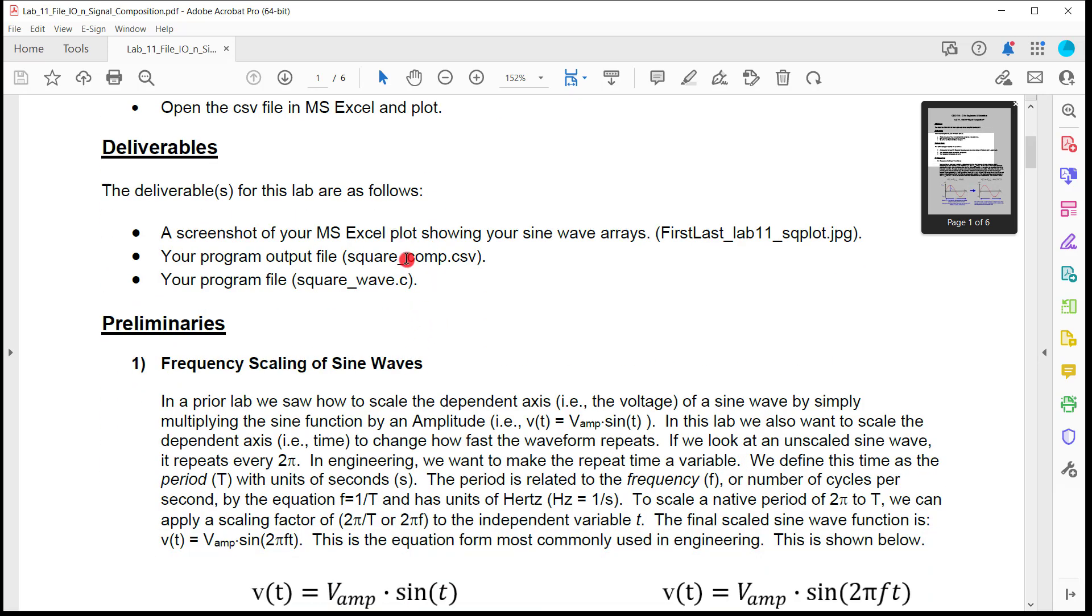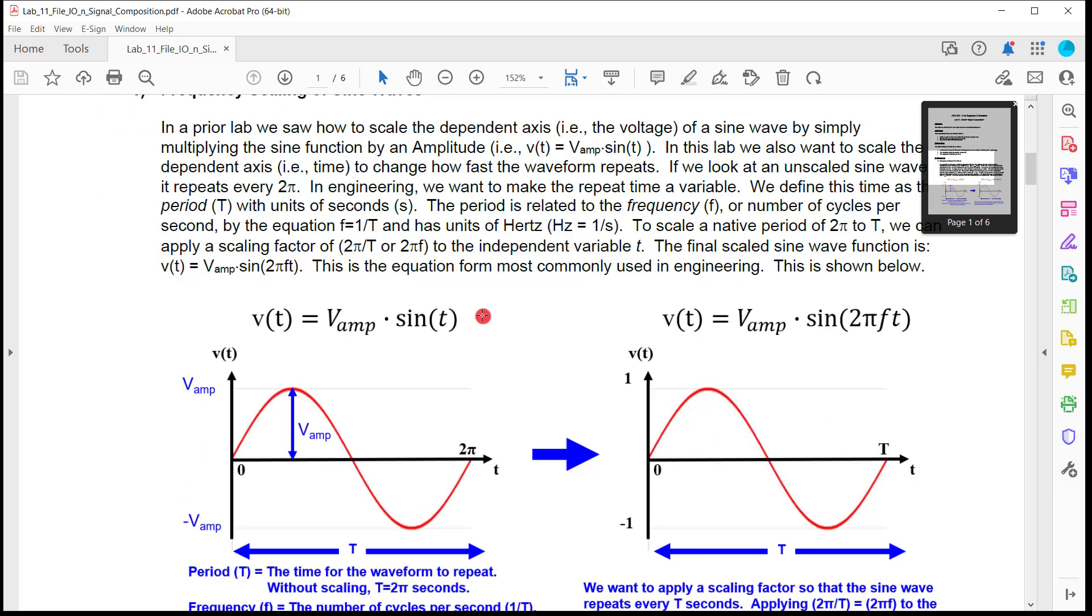Your deliverable is basically going to be a screenshot of your Excel plot, and it's also going to be your output file. You're going to deliver your output file, square_comp.csv, your actual file, and then your program file.